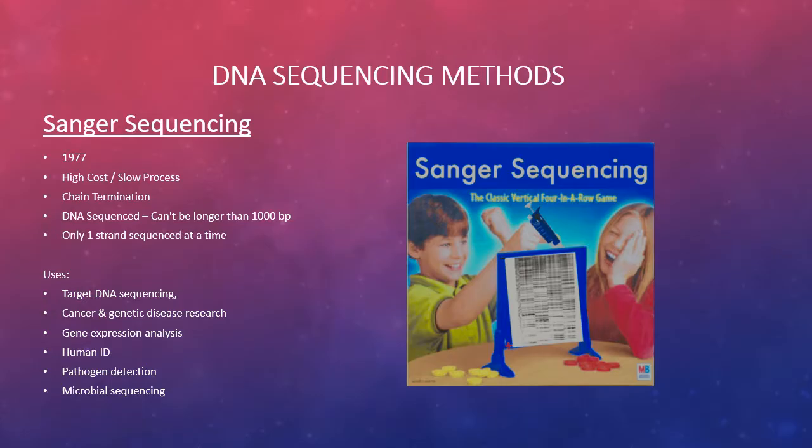The first method of DNA sequencing that I'll go over is Sanger sequencing. It was developed in 1977 by Frederick Sanger. It is a very slow process, and it has a higher cost associated with it. It uses chain termination, and the DNA to be sequenced cannot be longer than 1,000 base pairs. And only one strand can be sequenced at a time.